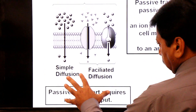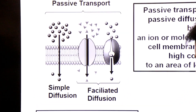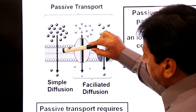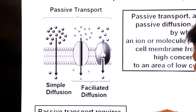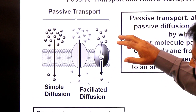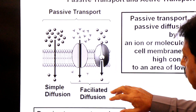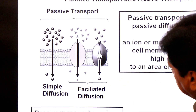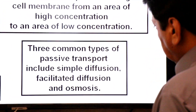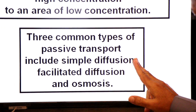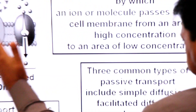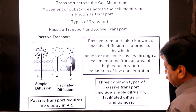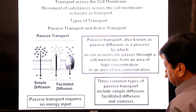There are two types of diffusion: simple diffusion and facilitated diffusion. The difference involves proteins. Small molecules cross the plasma membrane directly without the help of channel proteins — that is simple diffusion. Glucose and certain ions cannot cross directly; they need channel proteins — that is facilitated diffusion. The three common types of passive transport are: simple diffusion, facilitated diffusion, and osmosis.